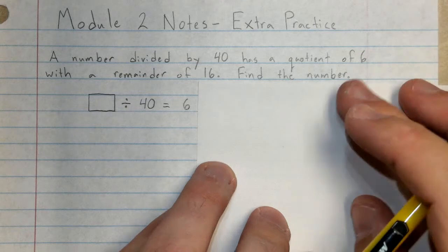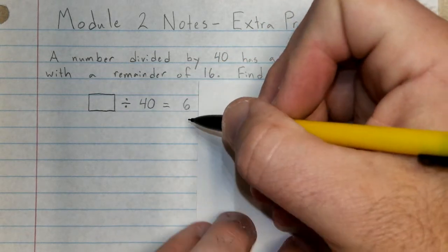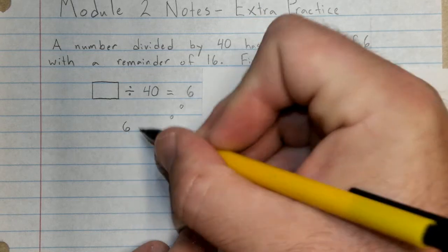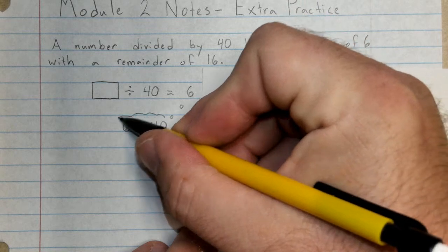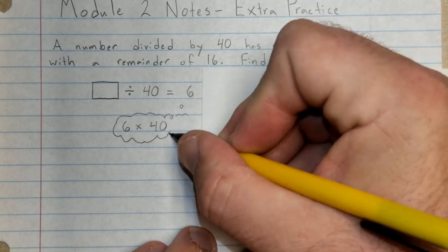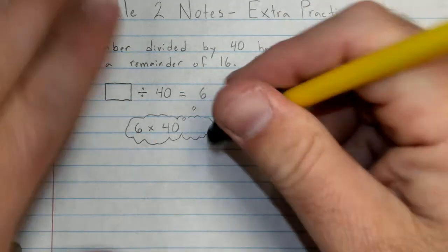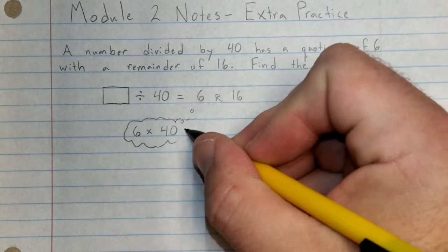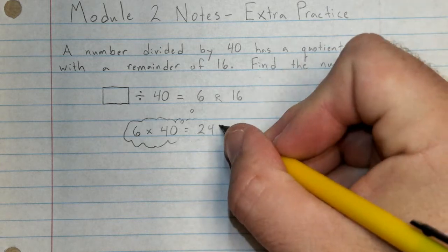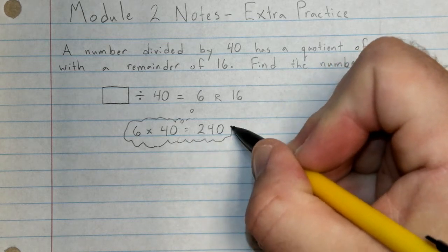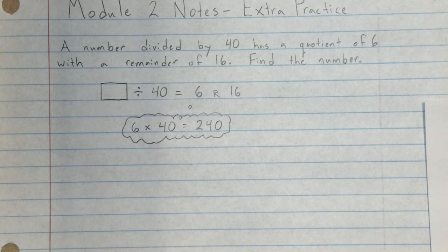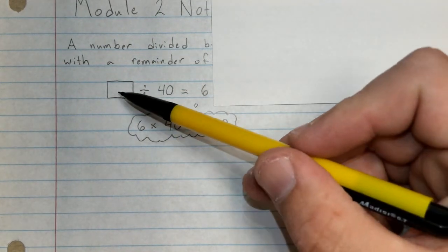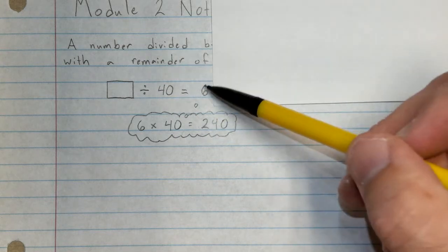Working backwards, I can use multiplication to determine what this is. I'm not going to write it in the box, but for now, something divided by 40 equals 6. So I'm going to work backwards, 6 times 40. If you remember what we've done, multiplying numbers that end in 0, multiples of 10, 6 times 4 is just 24. So if the remainder were not here, 240 divided by 40 would equal 6, because 6 times 40 is 240.